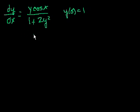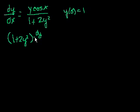But anyway, let's just do this. We have to separate the y's from the x's. Let's multiply both sides times 1 plus 2y squared. We get (1 + 2y²) dy/dx = y cos x.